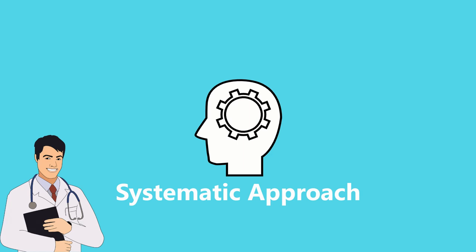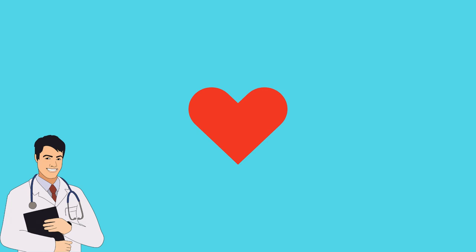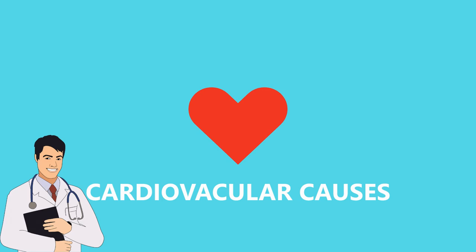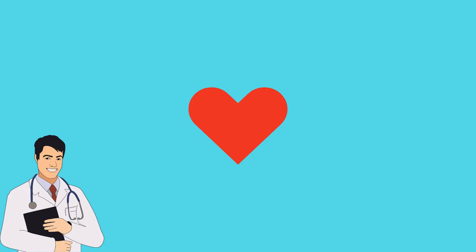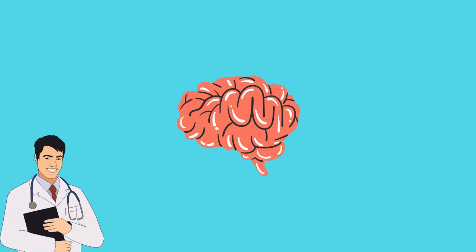When I assess a patient with dizziness, I think about three systems. The first is the otological system, the second is the cardiovascular system, and the third is the neurological system. Common otological causes of dizziness include Meniere's disease, benign paroxysmal positional vertigo also known as BPPV, or labyrinthitis. Cardiovascular causes include postural hypertension, cerebrovascular disease such as stroke or TIA, cardiac arrhythmia, aortic stenosis, and subclavian steal syndrome. Neurological causes include epilepsy, multiple sclerosis, brain tumours, normal pressure hydrocephalus, and peripheral neuropathy.